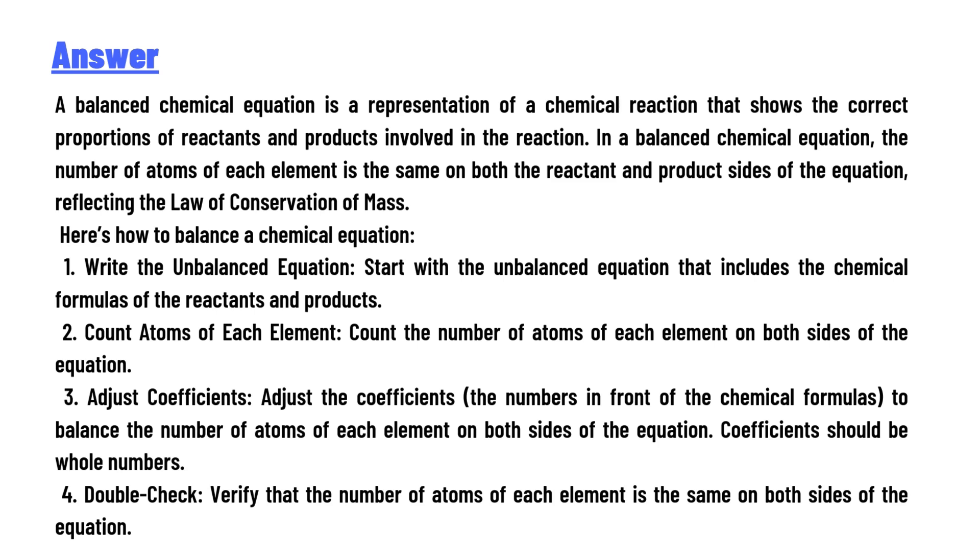Here's how to balance a chemical equation: 1. Write the Unbalanced Equation - Start with the unbalanced equation that includes the chemical formulas of the reactants and products. 2. Count Atoms of Each Element - Count the number of atoms of each element on both sides of the equation.